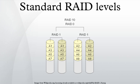RAID 0 splits data evenly across two or more disks without parity information for speed. RAID 0 was not one of the original RAID levels and provides no data redundancy. RAID 0 is normally used to increase performance, although it can also be used as a way to create a large logical disk out of two or more physical ones. A RAID 0 can be created with disks of differing sizes, but the storage space added to the array by each disk is limited to the size of the smallest disk.